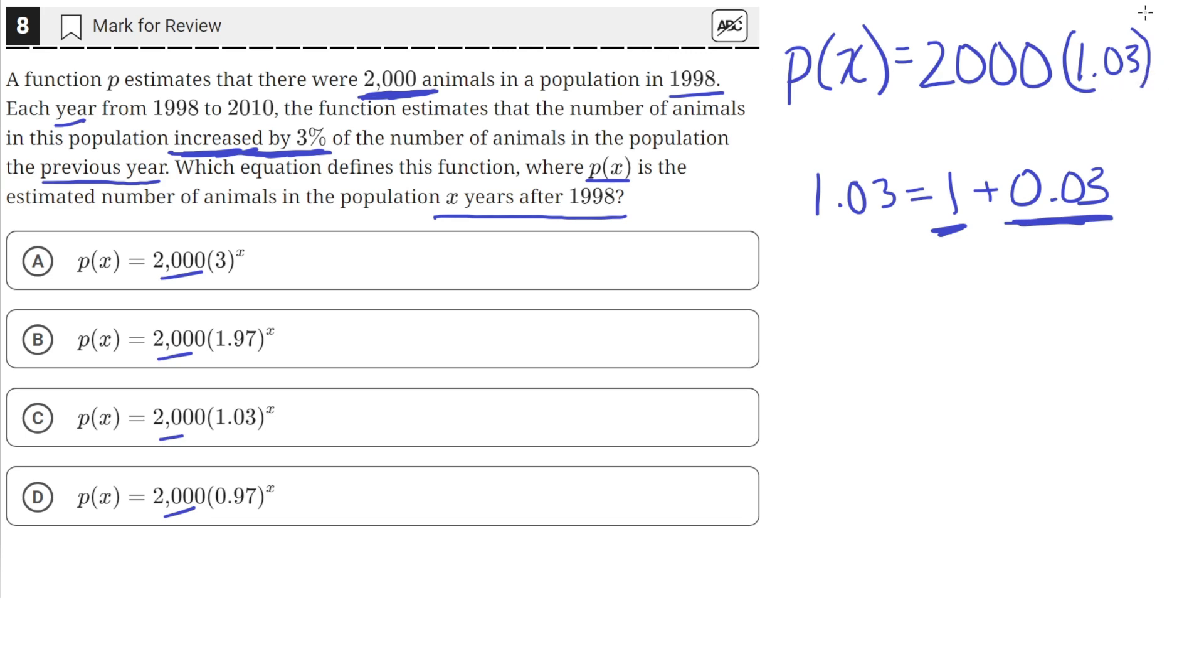And we raise that to the x since this exponential function tells us that the population increases 3% every year. So x years after 1998. So this is our completed exponential function. And that is equivalent to answer choice C.